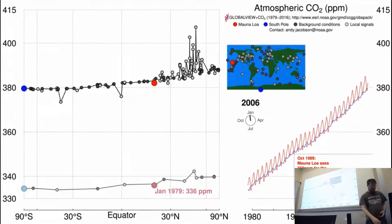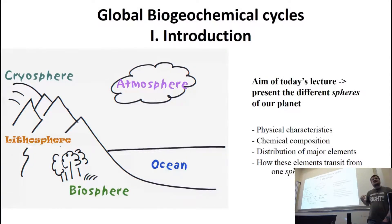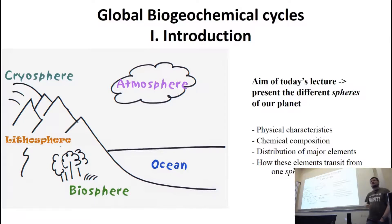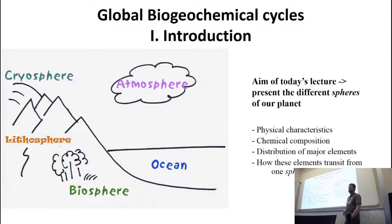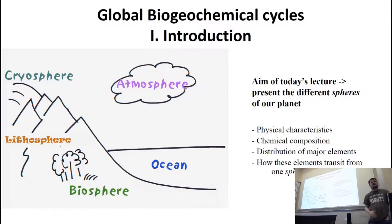Just to recap the last lecture — which was the introduction to biogeochemistry — we went through all the components of the climate system and described them in terms of what they're made of, what are the fluxes in, what are the fluxes out, and why are they important. For instance, the lithosphere was important because it controls the supply of nutrients and, through weathering, controls atmospheric carbon dioxide on long timescales. The biosphere, as we'll see today, is also very important for controlling atmospheric CO2.